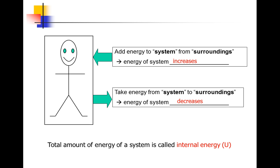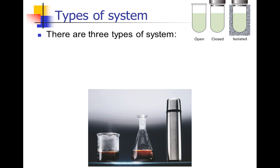There are three types of systems in thermodynamics. The first is an open system, where matter and energy can transfer with the surroundings — like an open beaker where heat and matter, such as steam, can pass in and out. A closed system, like a stoppered flask, is one where matter can't leave or enter, but energy can transfer through the walls. An isolated system, like an ideal thermos flask, is one where neither energy nor matter can transfer. The walls of such a system are called adiabatic walls — heat can't pass through.